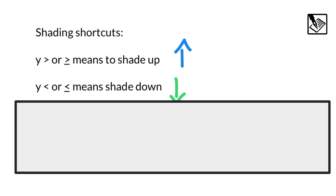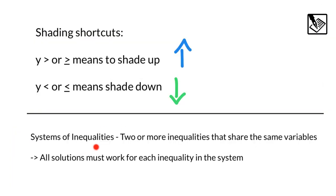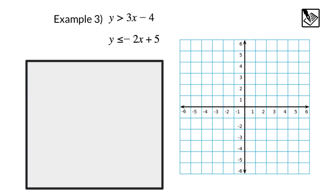As a bonus, we're going to be taking a look at a system of inequalities, which is basically two or more inequalities that share the same variables. It's just like systems of equations except using inequality symbols. All solutions must work for each inequality in the system in order for us to count it as a part of our solution. And here we have our third and final example. This system of inequalities, y is greater than 3x minus 4 and y is less than or equal to negative 2x plus 5.